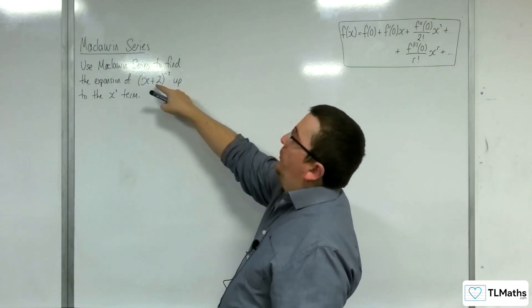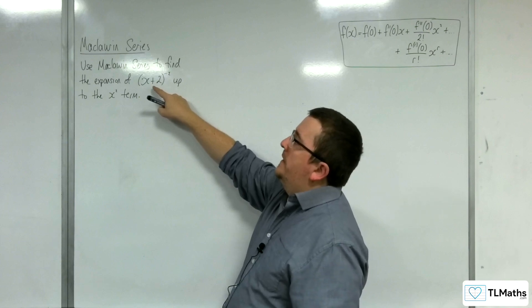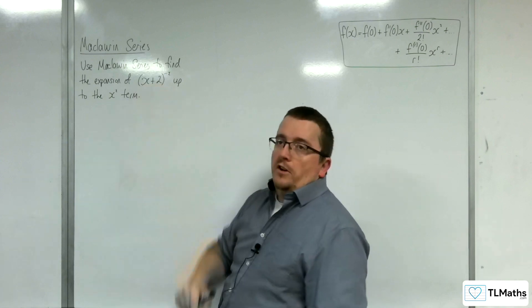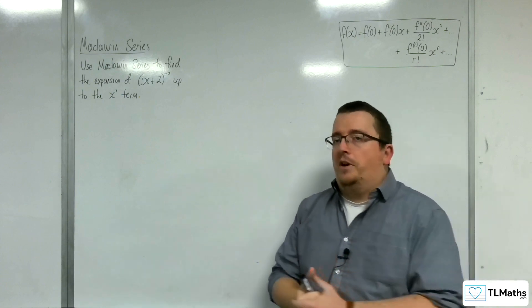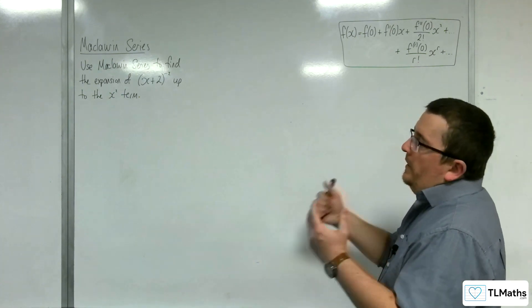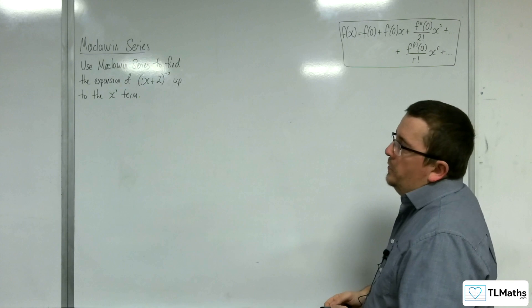You'd have to bring out 2 as a factor of the interior and have 2^(-2) on the outside. So you would have to do that first and then use the binomial expansion formula. But let's see how we can use Maclaurin series to do this.